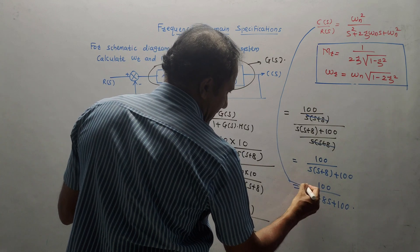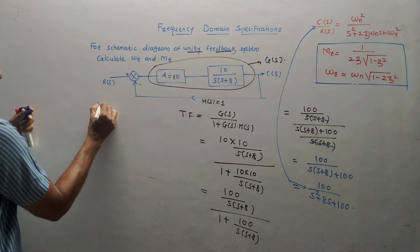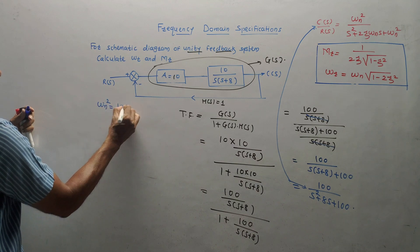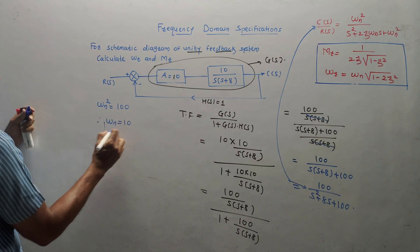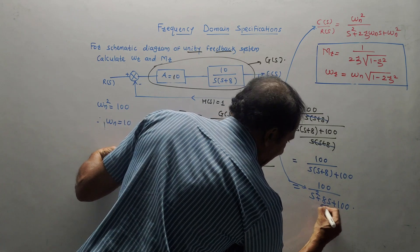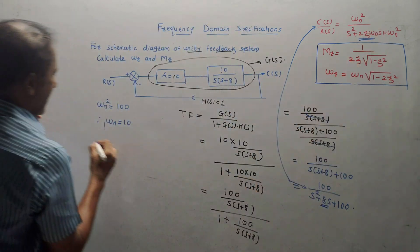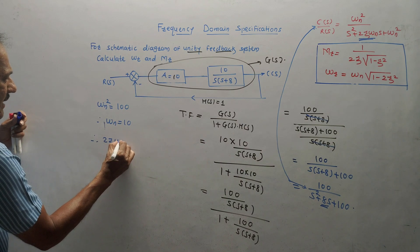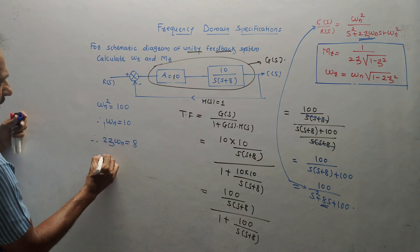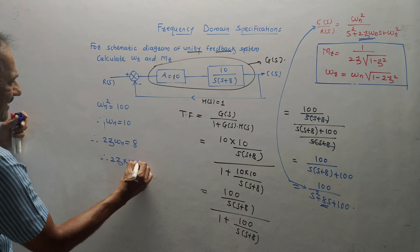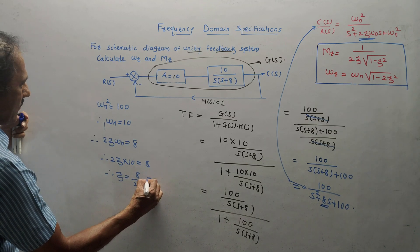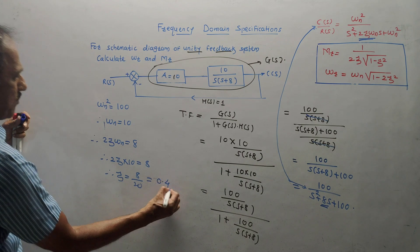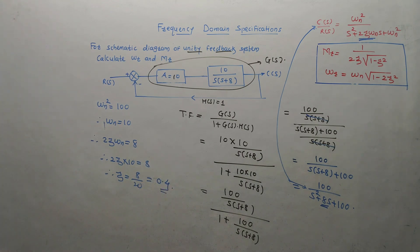Now compare with the standard transfer function formula. We get ωn² = 100, therefore ωn = 10. For zeta: the coefficient of s is 8, so 2ζωn = 8. Substituting ωn = 10: 2ζ × 10 = 8, giving ζ = 8/20 = 0.4. So we have got the values of ωn and ζ.